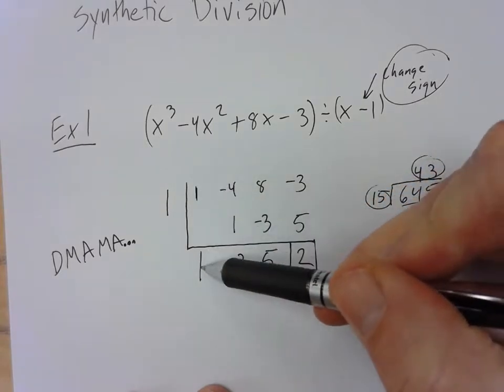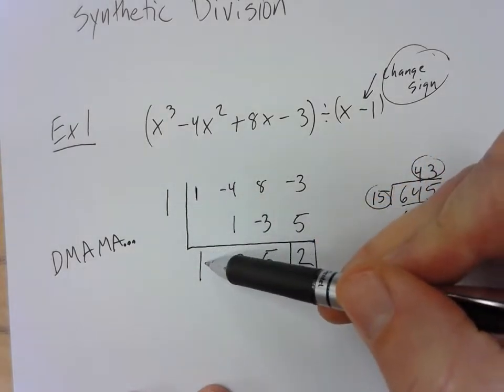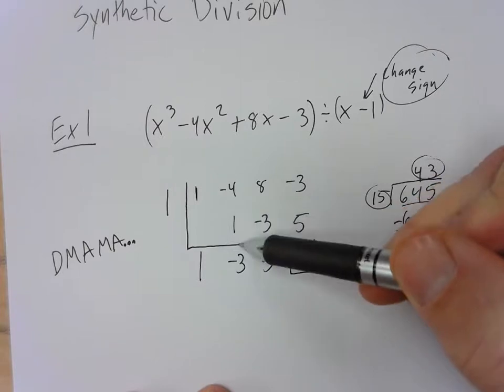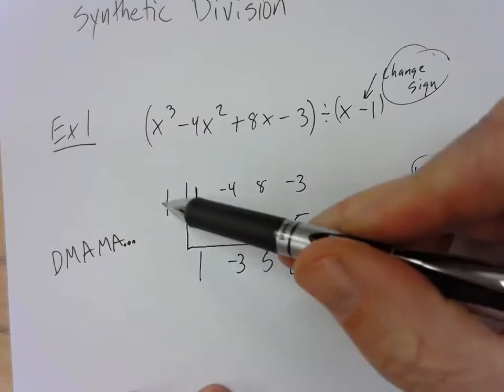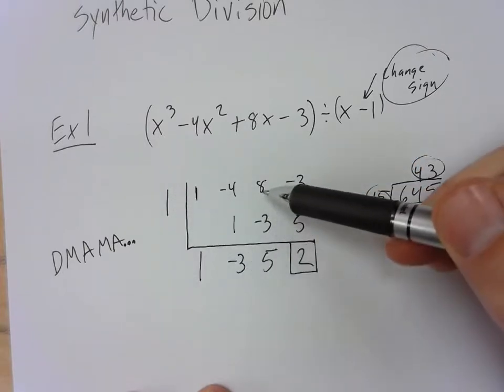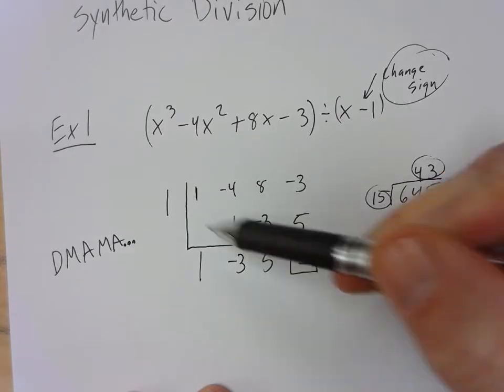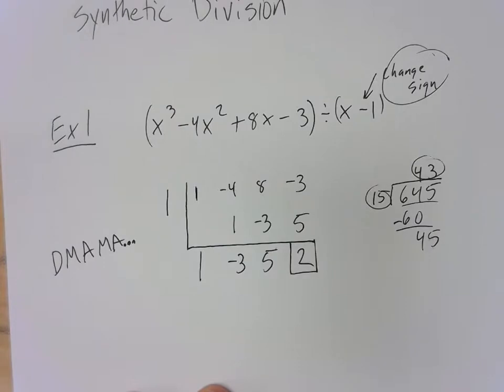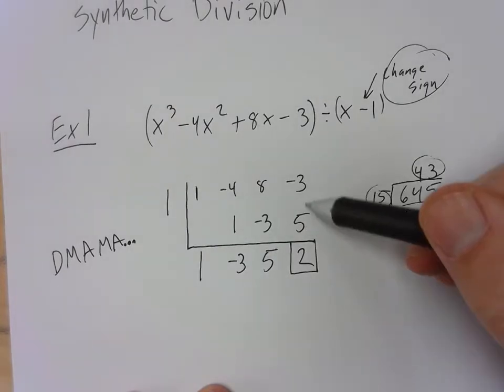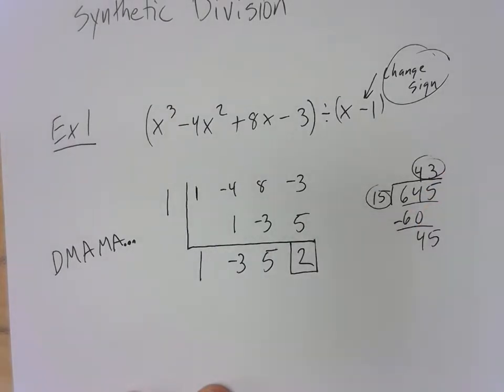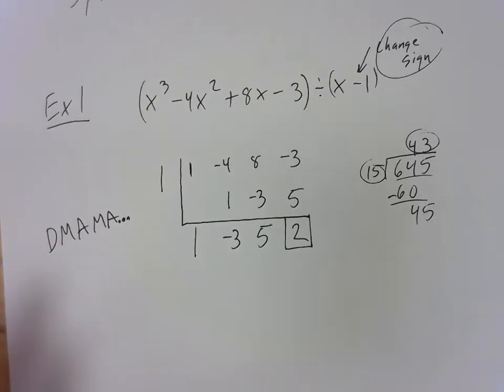So we drop this first number. We multiply these two together. We get 1. We add these two together to get negative 3. We multiply these two together to get negative 3. We add these two together to get 5. And then we multiply to get, and then we add them together to get negative 2.